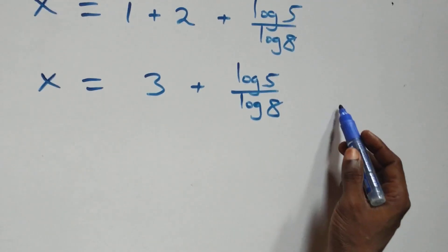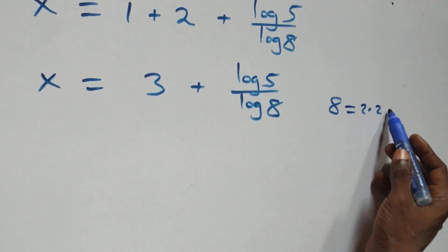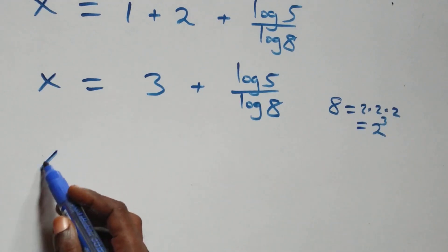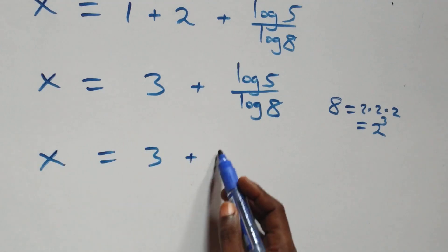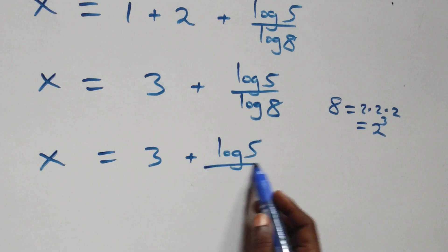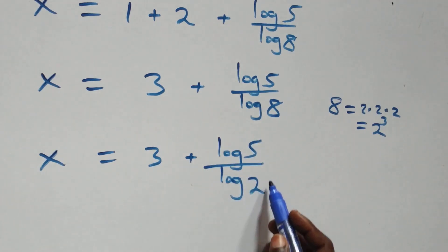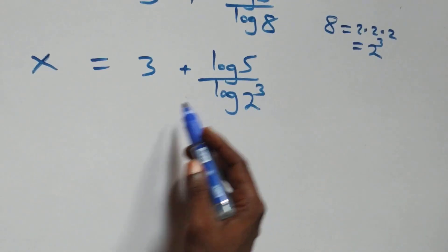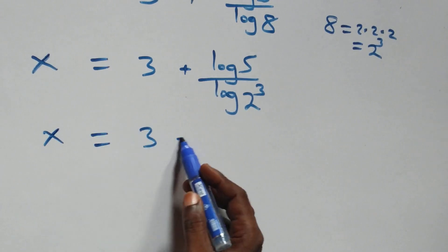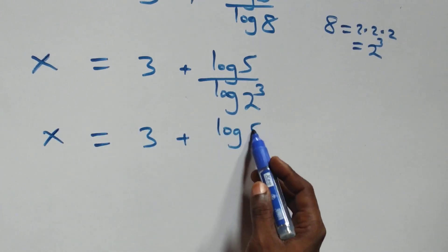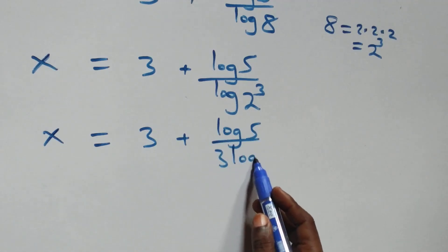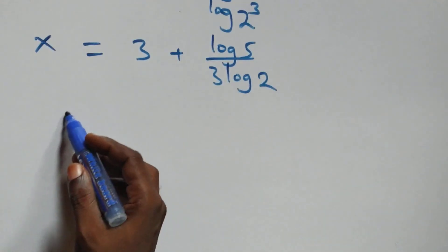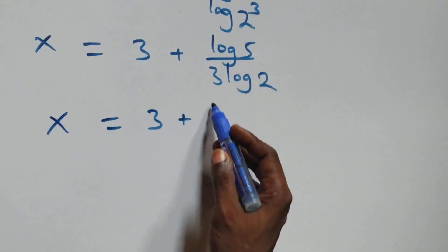Since 8 equals 2 times 2 times 2, which is 2 raised to power 3, we have x equals 3 plus log 5 over log of 2 raised to power 3. Applying the power rule of logarithm, 3 comes out front, giving x equals 3 plus log 5 over 3 log 2.